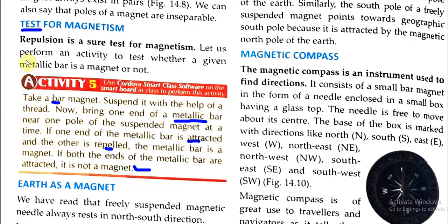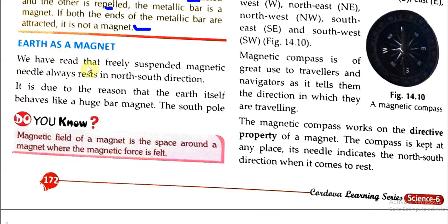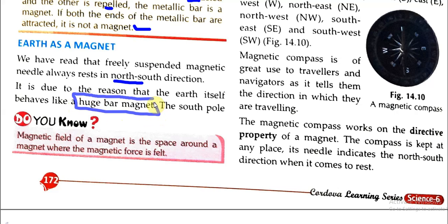Next we have Earth as a magnet. We have read that a freely suspended magnetic needle always rests in the north-south direction. If we freely suspend a magnetic needle, it always stops in the north-south direction. This happens because the Earth itself behaves like a huge bar magnet.